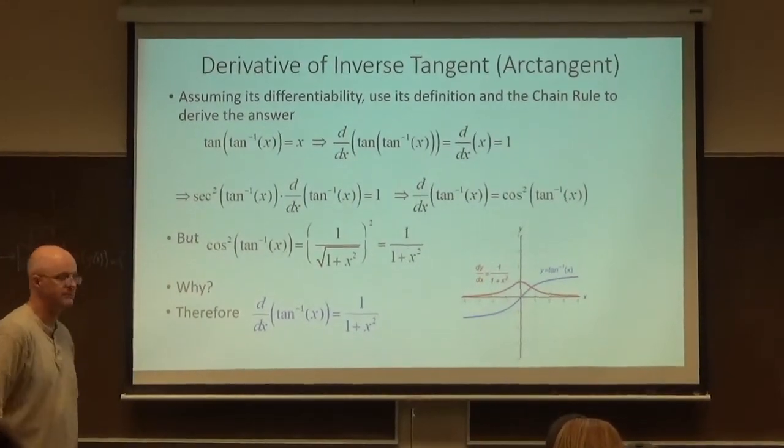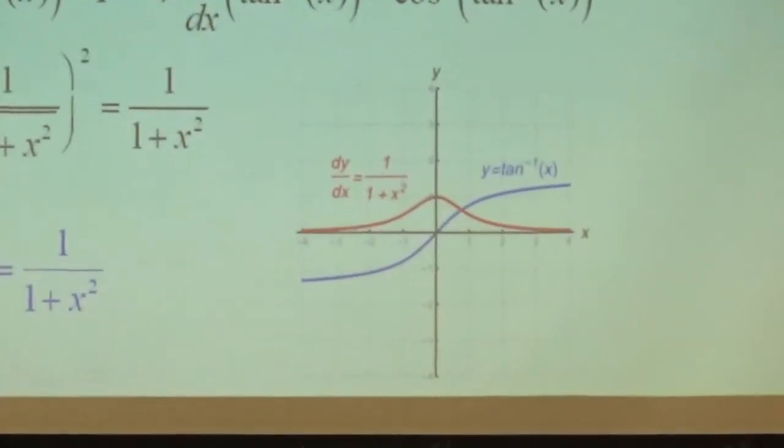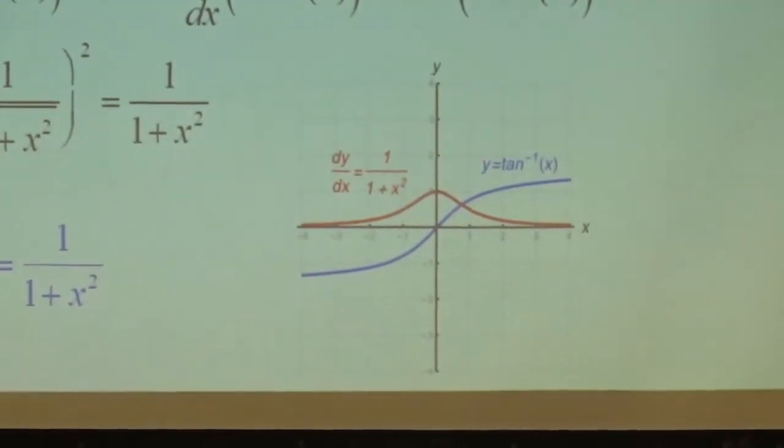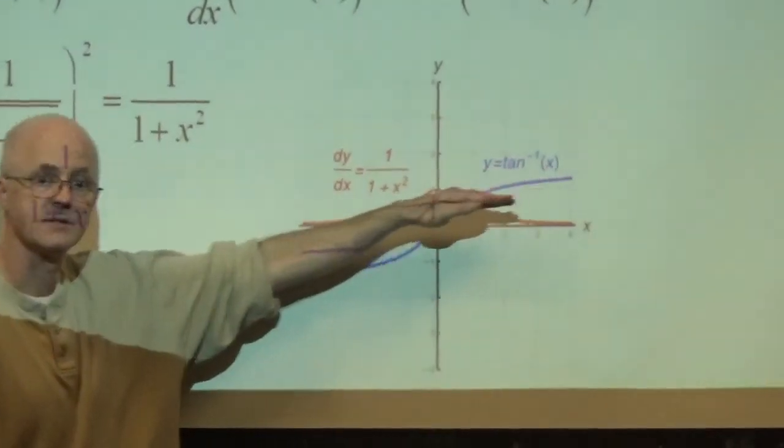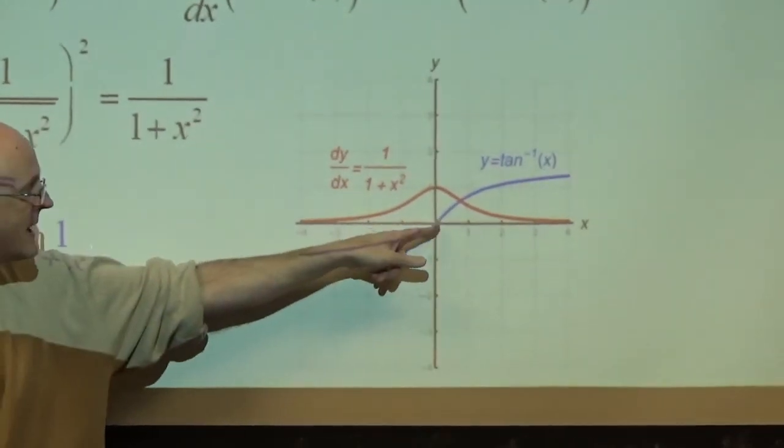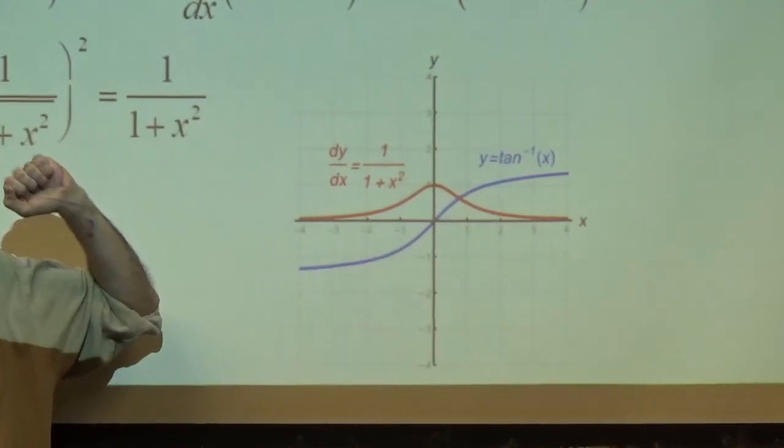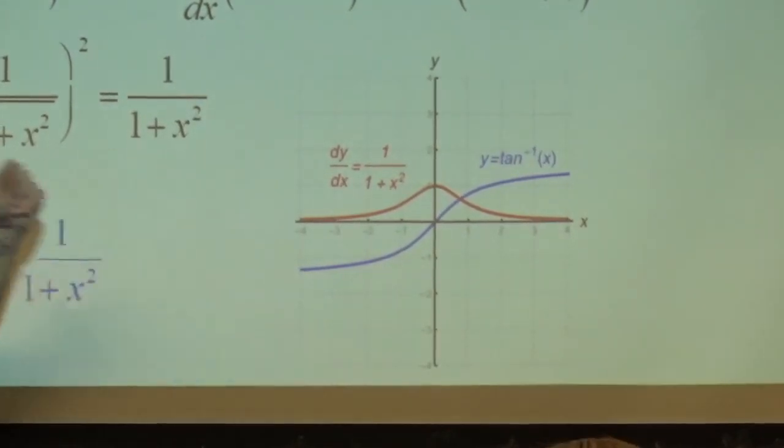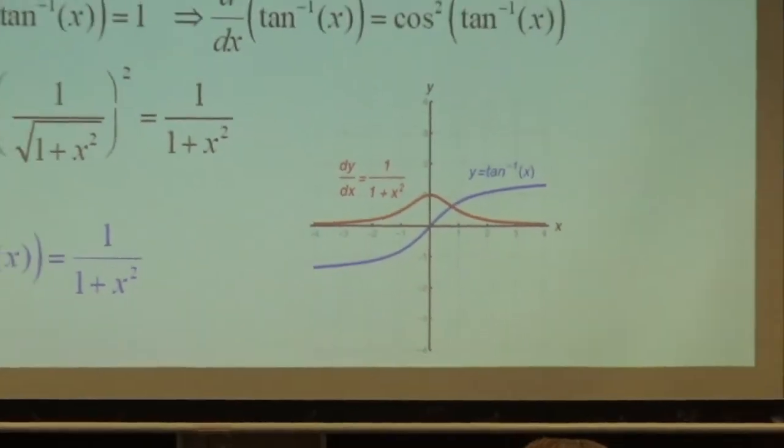And you can see it graphically, too. The red graph is the derivative. Its outputs are giving you the slopes of the blue graph. This is the graph of the inverse tangent. Slopes are always positive. So the outputs of the red are always positive. Slope is maximized when x is 0. The output of the red is maximized when x is 0. That graph helps you believe it. Alright, we'll start with lecture A there. Take the quiz.